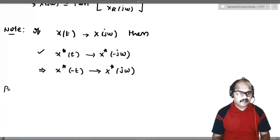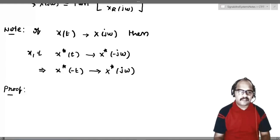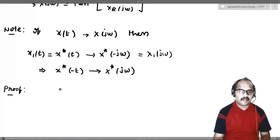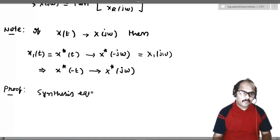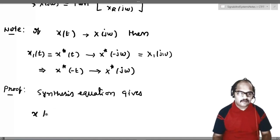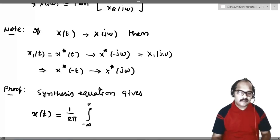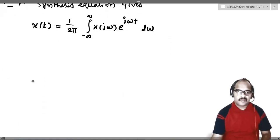Let's prove the first result. The second one follows from the time reversal property. For the proof, assume x*(t) as a new signal x₁(t) with corresponding Fourier transform X₁(jω). We write down the synthesis equation: x(t) = (1/2π) ∫₋∞^∞ X(jω) e^(jωt) dω.